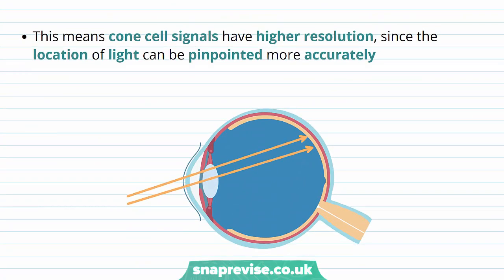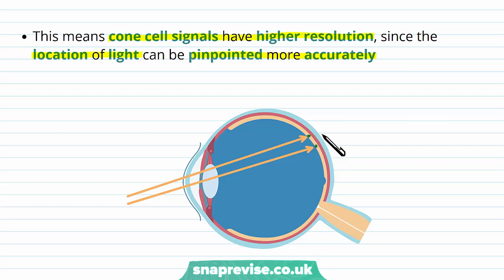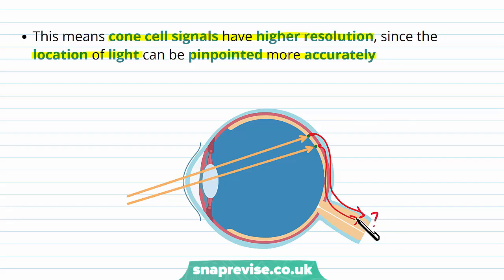Cone cells are therefore much more exact. Cone cell signals have a higher resolution because the location of light can be pinpointed more accurately. Two rays of light hitting the foveal region each hit their own different cone cell, each with its own bipolar cell, which each give a separate pathway of response to the brain so it knows which is which.